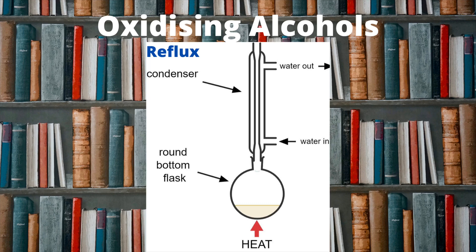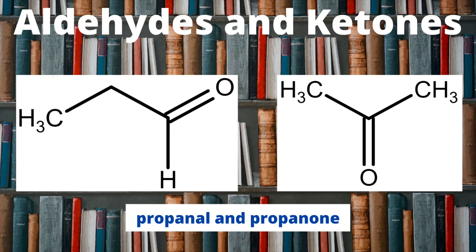Now let's look at the structures of the products of these oxidation reactions. On the left is propanal, which would be synthesized from the primary alcohol propan-1-ol. On the right is propan-1-one, synthesized from the secondary alcohol propan-2-ol. Propanal is an aldehyde and propan-1-one is a ketone. Both have a carbon double bonded to an oxygen, however for the aldehyde that carbon is always at the end of a chain, whereas for the ketone that carbon is always between two other carbon atoms.